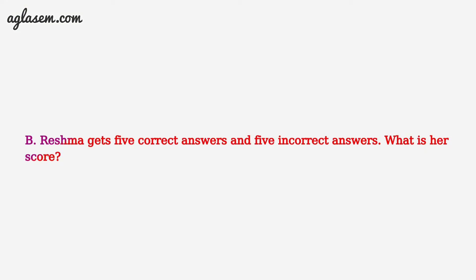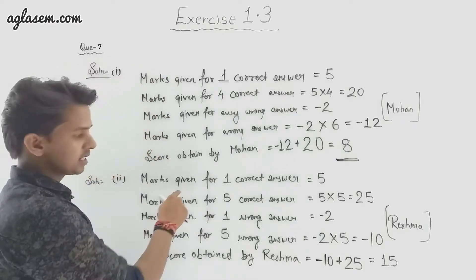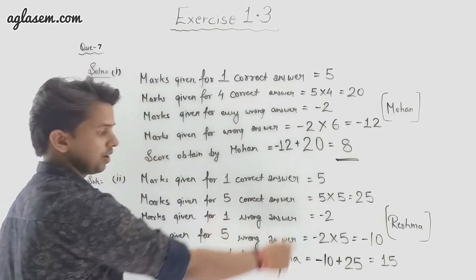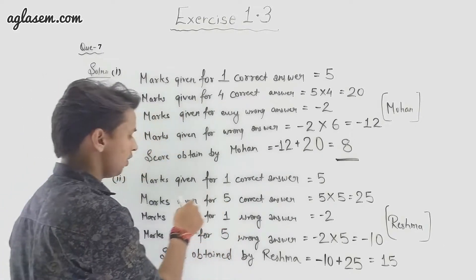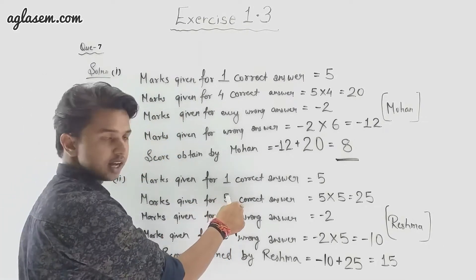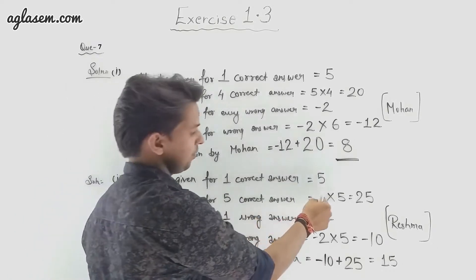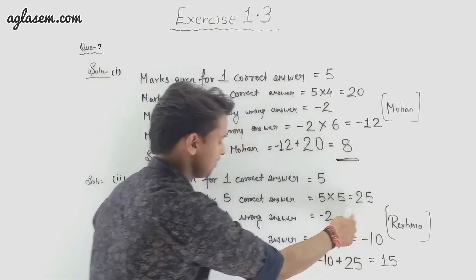Now for the next part: Reshma gets 5 correct answers and 5 incorrect answers. What is her score? Marks given for one correct answer is 5, so marks for 5 correct answers is 5 multiplied by 5, which equals 25.